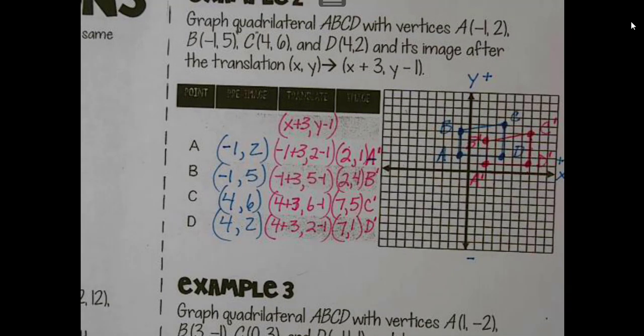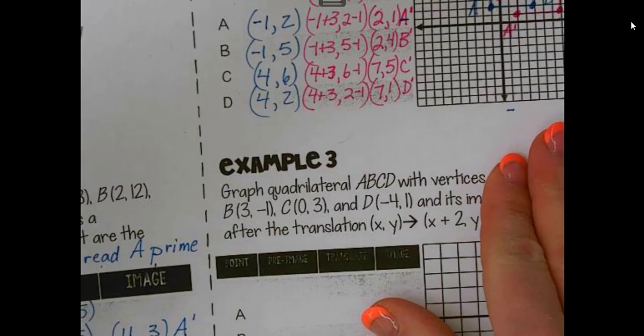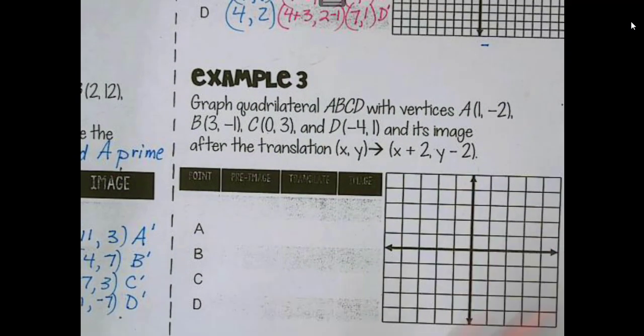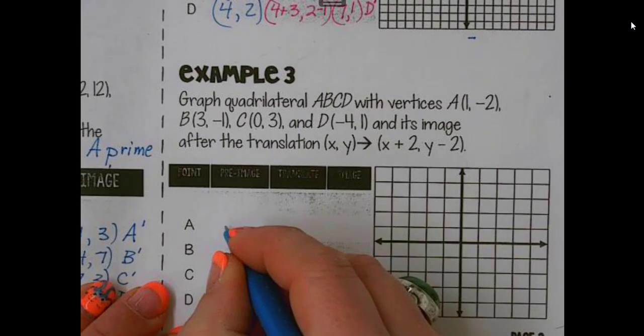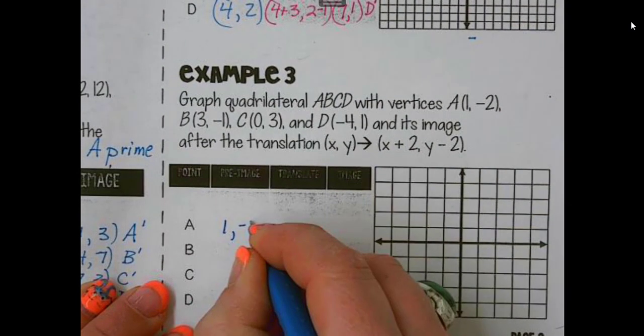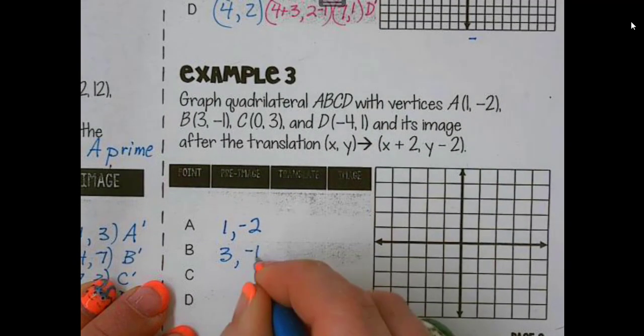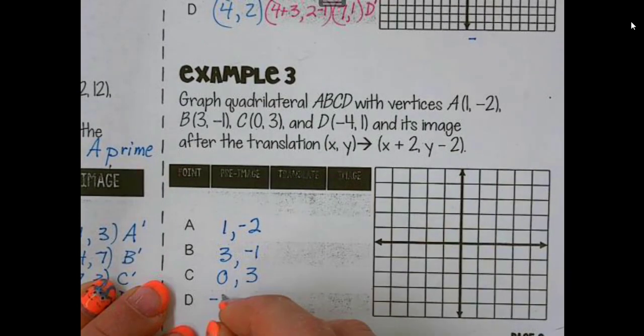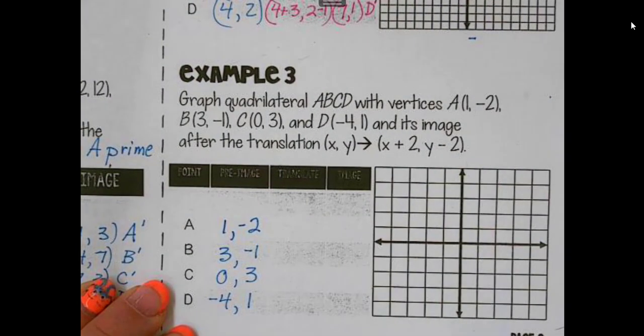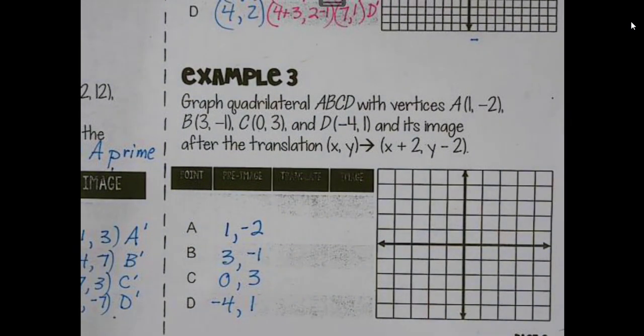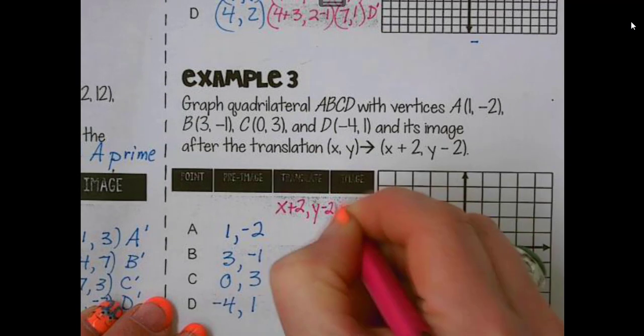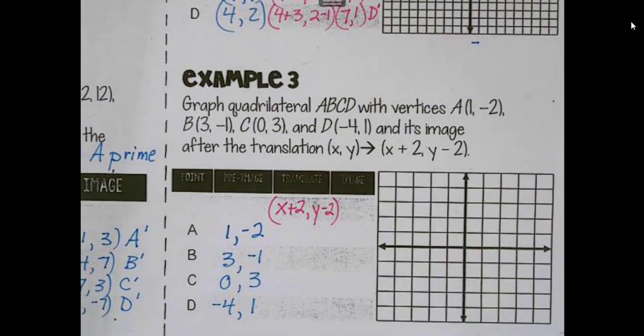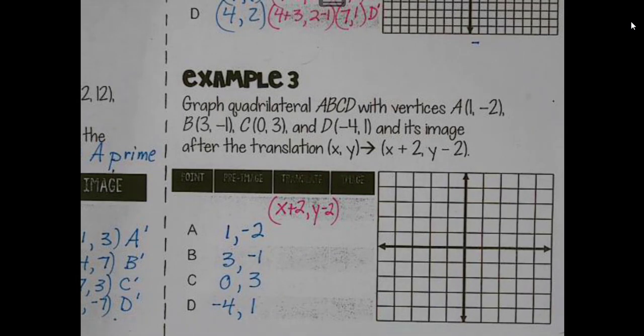Great. We have one more example. Now, really what I'd like you to do is I'd like you to try it on your own. So I'll help you get started. I'm going to use blue. We're going to put in our pre-image values. And then you want to plot those. You want to plot those four points. And then our translation this time is going to be x plus 2, y minus 2. So I'd like you to pause the video right now. And I want you to practice this.